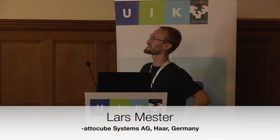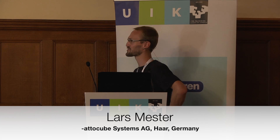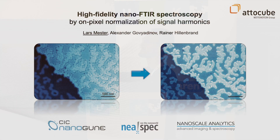I want to talk about high-fidelity nano FDIR, which is the paper where we divide two harmonics by each other, or subtract the phases. And you can get from data that looks like this, to data that looks like that, where you can really put a ruler, and if you take a line profile, it's super flat, surprisingly flat.